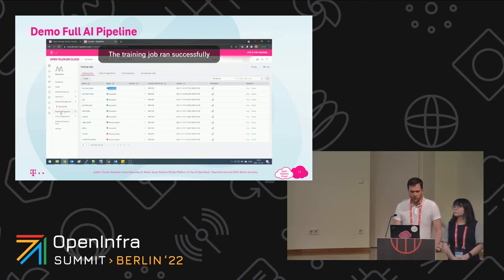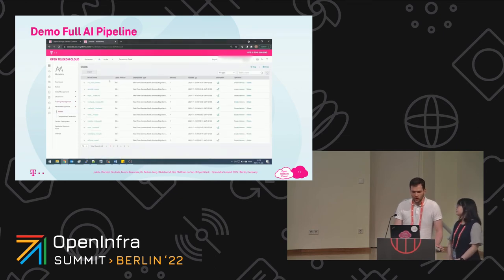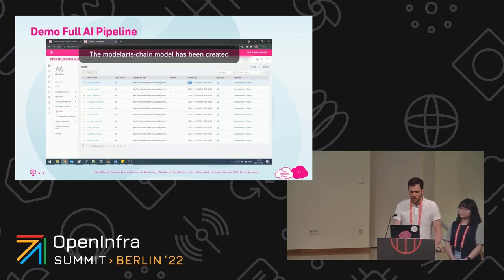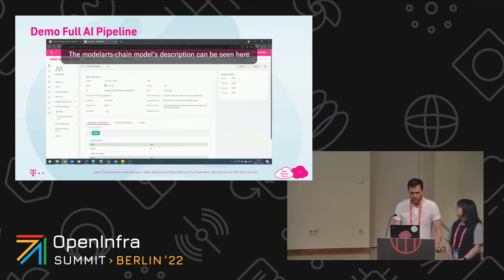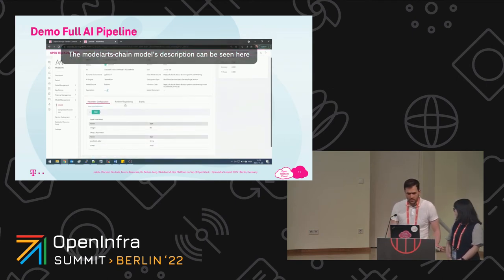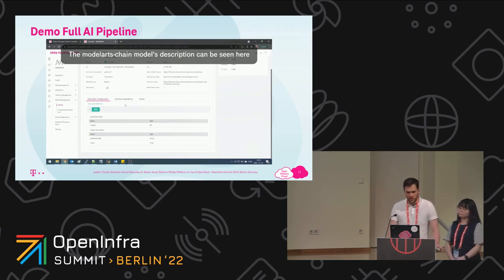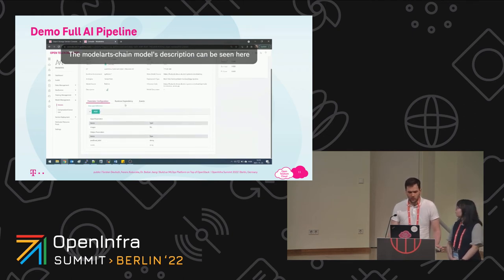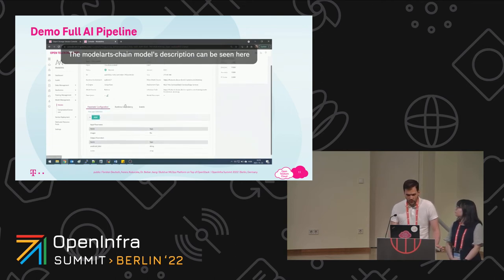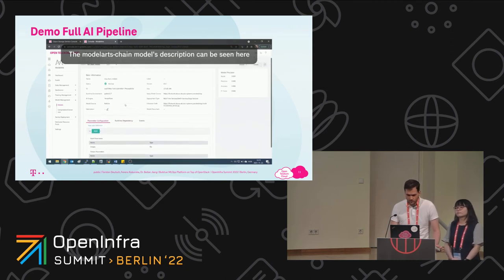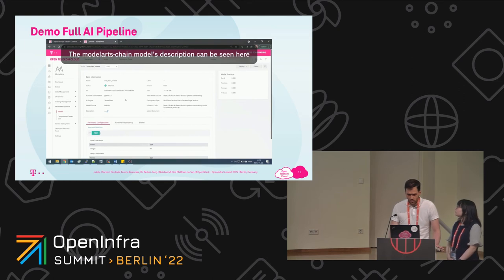Now we have the dataset ready and the training job ready. The third step is model management — models. Our model is there: MA chain MO test, which we named in the OpenStack script. It has been created. I will show you some details. We have the basic information, but the parameter configurations are more interesting: it defines what we have as input for this task — it's an image, a flower image. The output will be a predicted label: which type of flower from the five categories, and the scores — what percentage it gives to each category. This can be important if we have 50-50% for two flower types because they are similar. We also see the runtime environment, AI engine, and the OBS path.